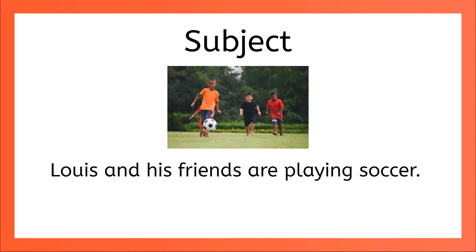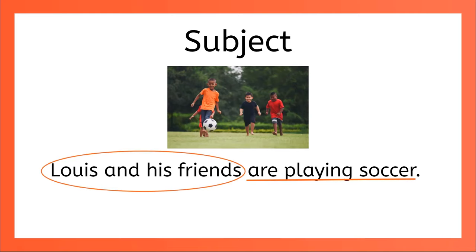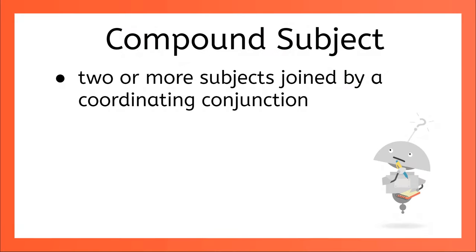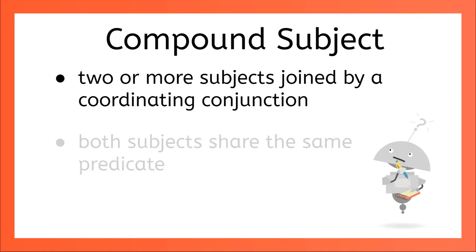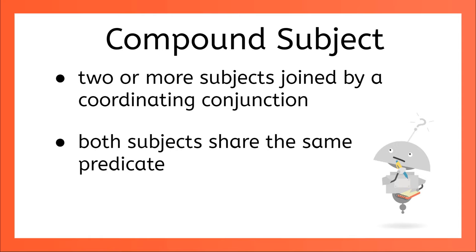What if our sentence is, Lewis and his friends are playing soccer? Our predicate is are playing soccer, but our subject is now Lewis and his friends. We actually have two subjects joined with the coordinating conjunction AND. We call this kind of subject a compound subject. A compound subject contains two or more subjects joined by a coordinating conjunction. Both of the subjects share the same predicate.